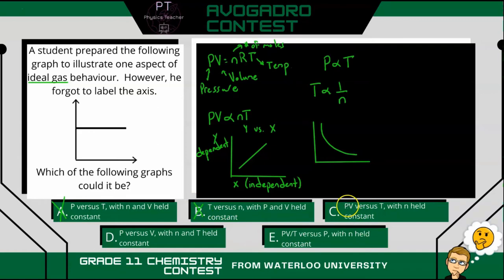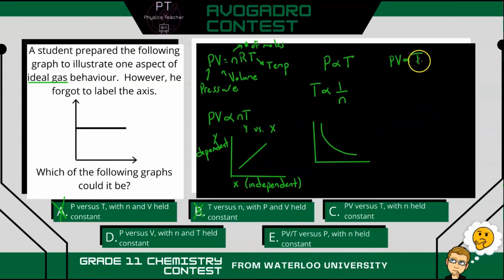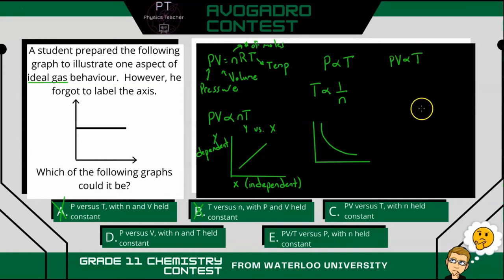Next is PV versus T. In this case, n is held constant, so we have PV proportional to temperature. As temperature increases, so does this combination of pressure and volume — it could be one, the other, or a combination of both. Either way, we again have a linear relationship, so not C.